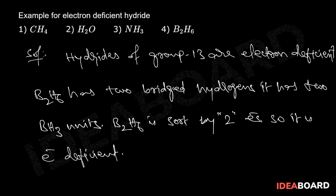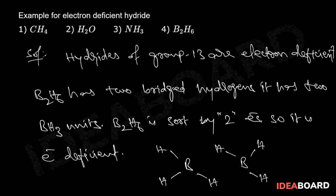If you see the B₂H₆ structure, boron is attached to three hydrogen atoms. And another boron also has three hydrogens attached to it. This boron and hydrogen electron-deficiency is there. These two hydrogens we will call bridge hydrogens. So, B₂H₆ is an electron-deficient species.